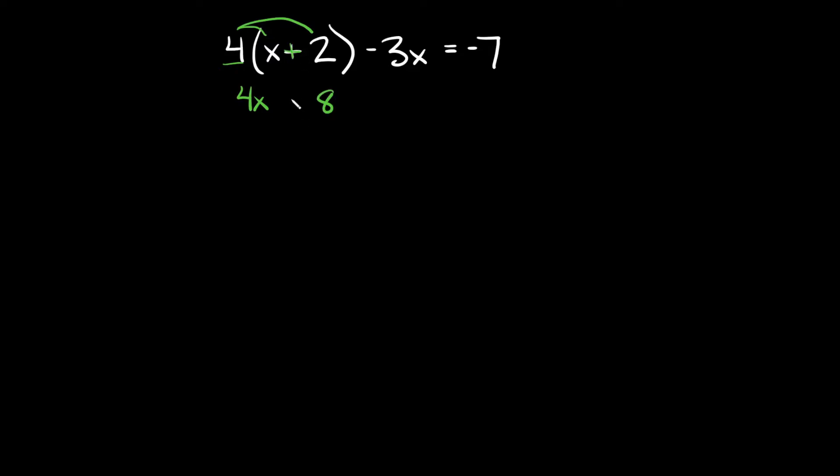And since you're adding right here you just keep that plus symbol right there. Now bringing down the rest of the equation we have minus three x is equal to negative seven.